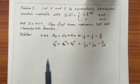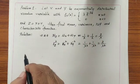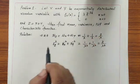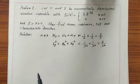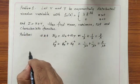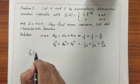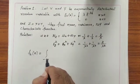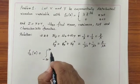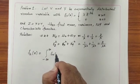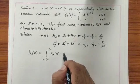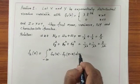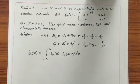Next, we find the probability density function. Last class we discussed the PDF of the sum of two independent random variables and found that f_z(z) equals the integral from minus infinity to plus infinity of f_x(x)·f_y(z − x) dx.